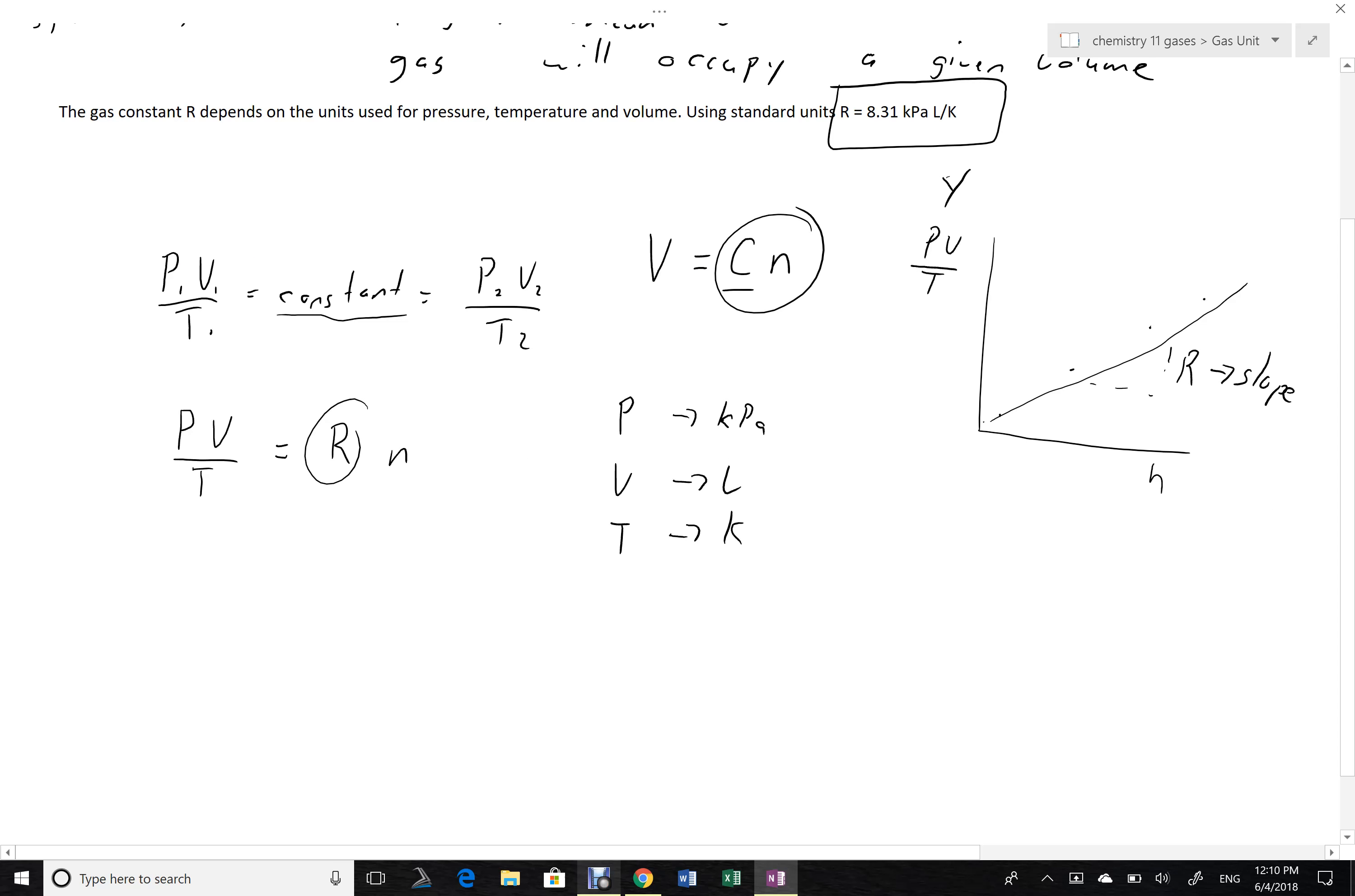This formula is not typically written this way. It's typically written PV equals nRT, where we've simply moved the T up to the other side and switched the order of the n and the R, and this is the ideal gas law.